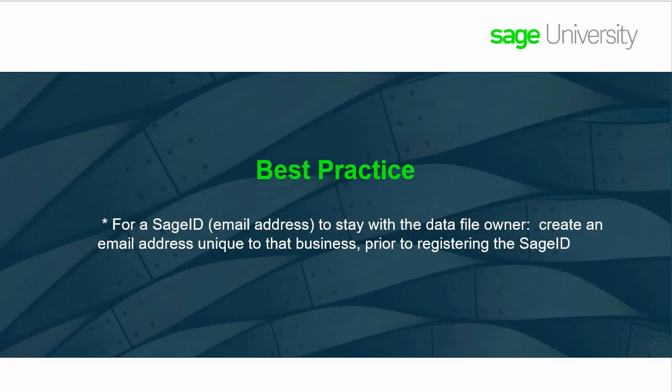It is best practice for the Sage ID or email address to stay with the data file owner. An employee and/or bookkeeper should not use their Sage ID or email to share a company file, as they are not the owner of the data. If the service relationship ends or the employee leaves, their Sage ID or email address and the data ownership would go with them. If you are responsible for sharing a company data file on behalf of a business owner, please create an email address unique to that business. If you ever part ways, the email address and Sage ID can be handed over to the business owner.